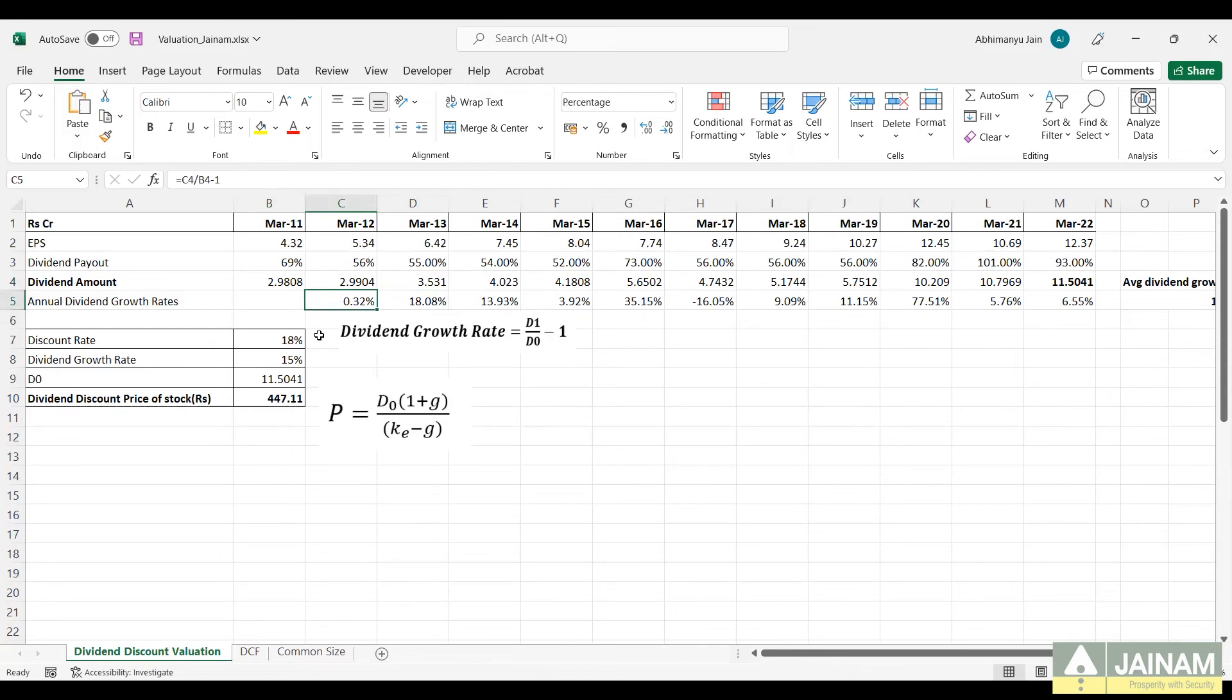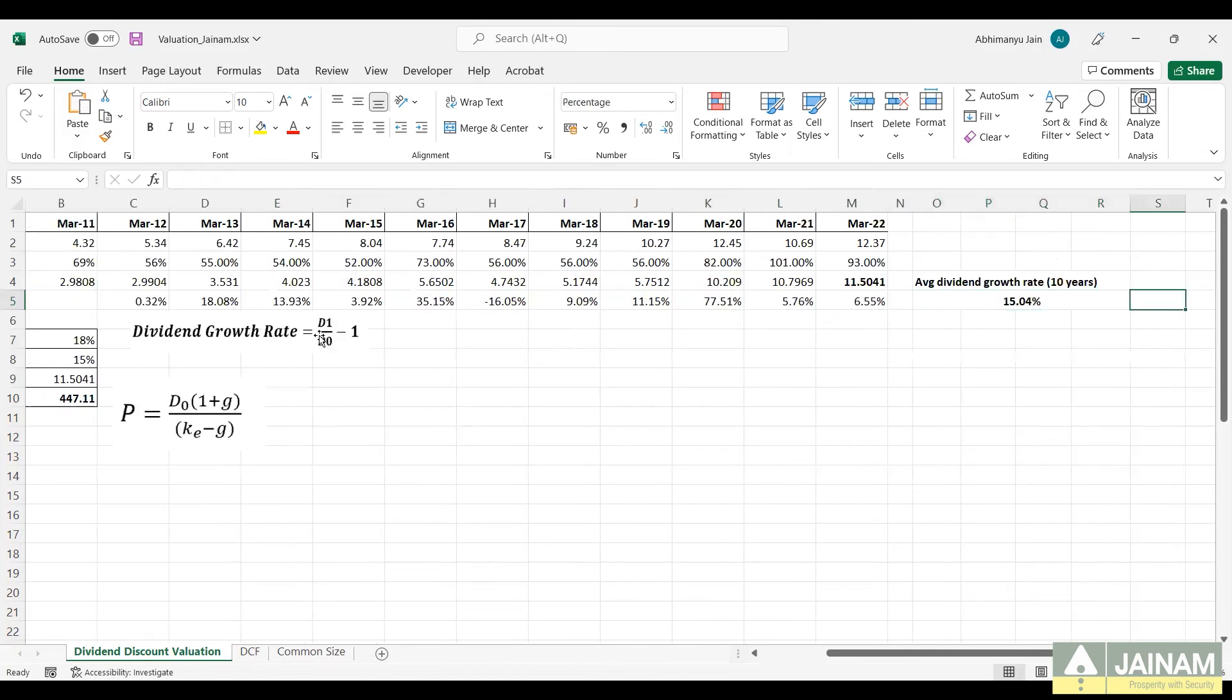Using this formula, we can calculate the dividend growth rate for the other years as well. For the constant dividend growth rate, that is the growth rate to be put in the formula, we have taken it as the average 10 year dividend growth rate.